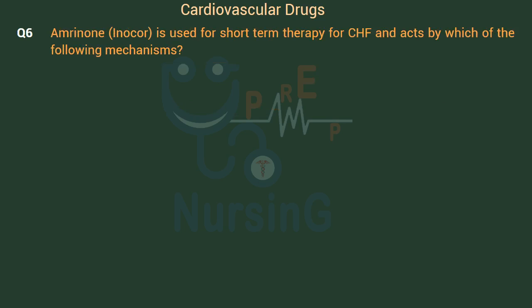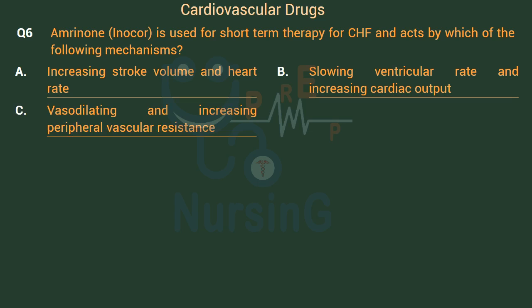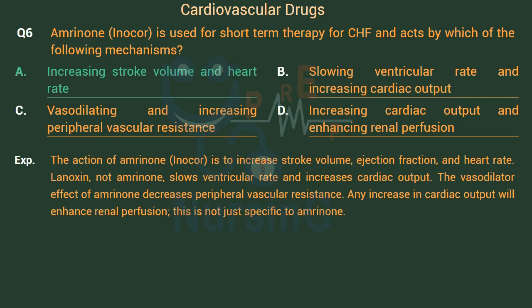Amrinone (Inocor) is used for short-term therapy for CHF and acts by which of the following mechanisms? Option A: Increasing stroke volume and heart rate. Option B: Slowing ventricular rate and increasing cardiac output. Option C: Vasodilating and increasing peripheral vascular resistance. Option D: Increasing cardiac output and enhancing renal perfusion. The right answer is Option A: Increasing stroke volume and heart rate. The action of amrinone is to increase stroke volume, ejection fraction, and heart rate. Lanoxin, not amrinone, slows ventricular rate and increases cardiac output. The vasodilator effect of amrinone decreases peripheral vascular resistance. Any increase in cardiac output will enhance renal perfusion, but this is not specific to amrinone.